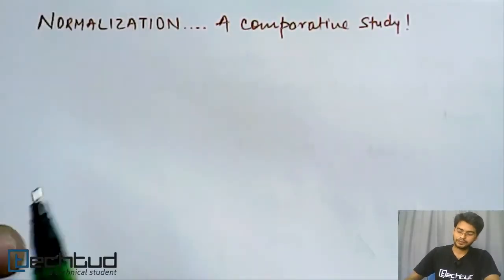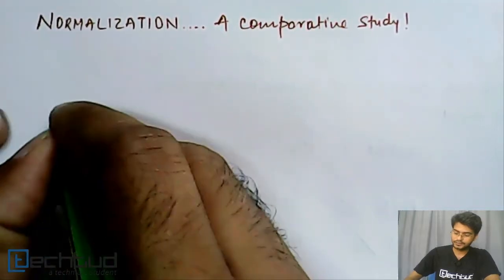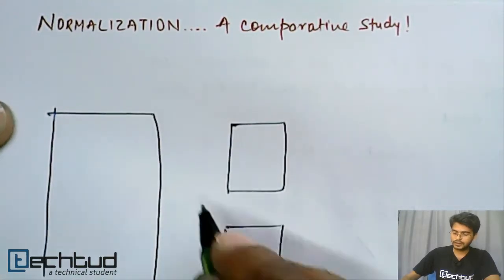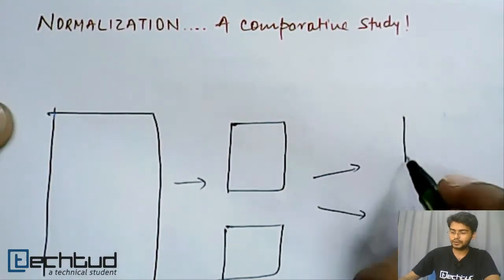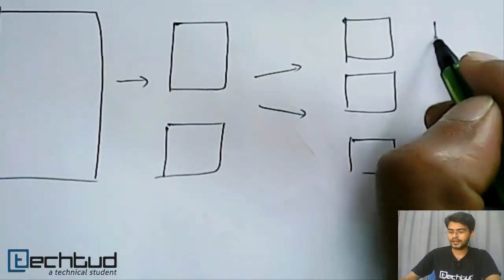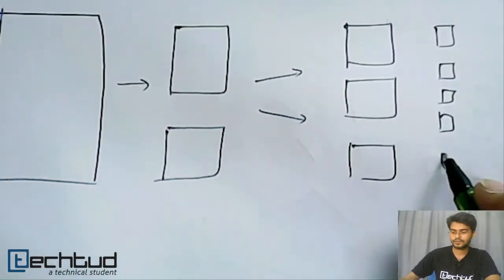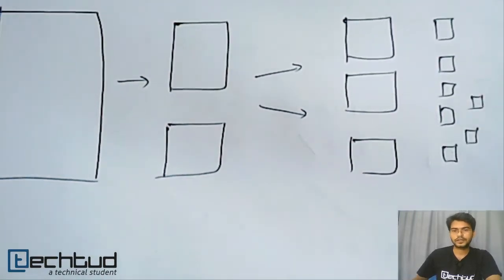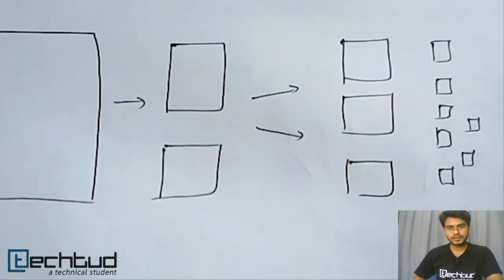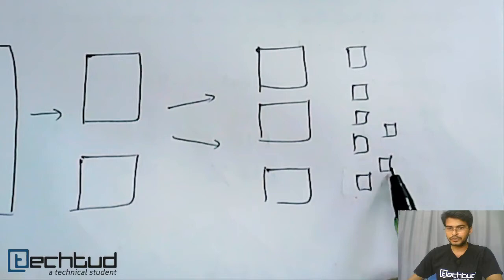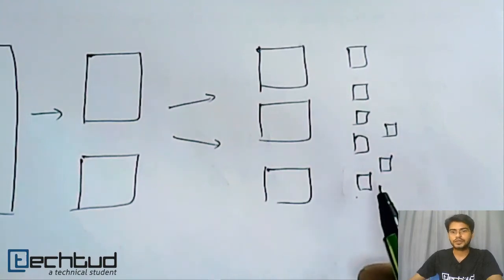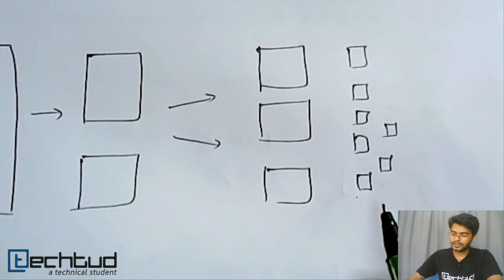When we go for higher level normal forms, the number of tables which we have - this is the entire data - when we go for normal forms, again higher level normal form, number of tables keep on increasing. Similarly when we go again higher level, number of tables increases. So many tables. Now what happens when we have to retrieve data or save data in these tables? The complexity increases because the data is distributed into multiple tables.